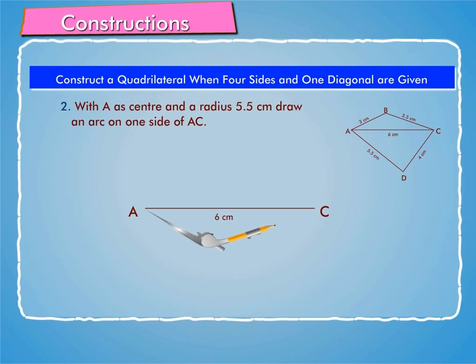Step 2: With A as center and a radius 5.5 cm, draw an arc on one side of AC.